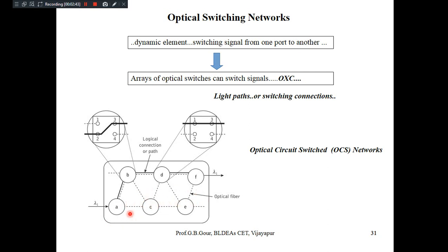For example, here we have an optical network containing six nodes: A, B, C, D, E, and F. The thick line indicates the physical path between nodes — existing only between nodes A, B, D, and F. The physical path is already established, which is the first requirement for OCS networks — established for transmission of wavelength lambda 1 from node A to node F.